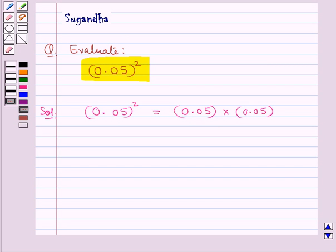So we need to find the product of these two decimal numbers. For this we multiply the two decimals without the decimal point just like we multiply the whole numbers.